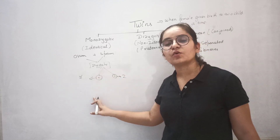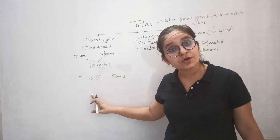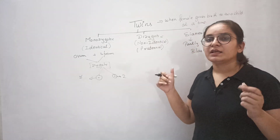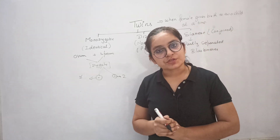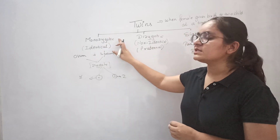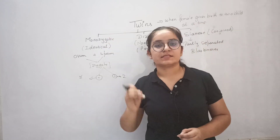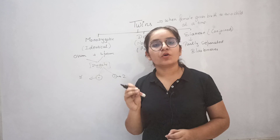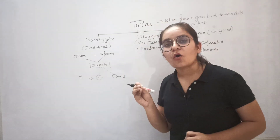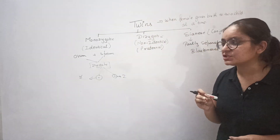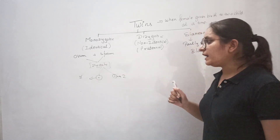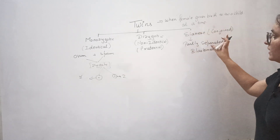Each zygote undergoes cleavage and produces two different embryos, which undergo separate implantation, and then two children are produced. These monozygotic twins are always either both male or both female. They are identical in almost all of their features because they are produced from a single zygote.